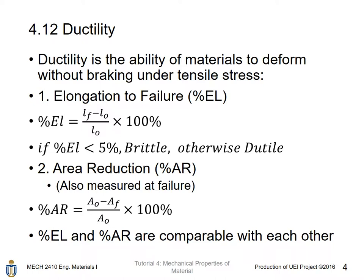Area reduction is comparable to elongation to failure, and it is also measured at the failure point. Percentage AR is equal to A0 — the original cross-sectional area — minus the area at the failure point, which is the reduced area at the failure point. If you still remember the necking phenomenon at the later stages for a bar under uniaxial tensile test — over A0, times 100%. These two numbers, EL and AR, are comparable with each other.